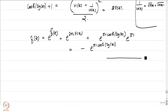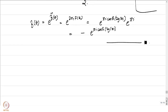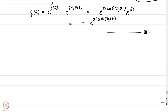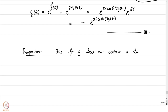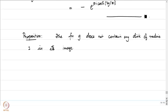Why did we deal with such a weird function g? The reason is that g is special. We will see in the next proposition that g is a function which does not contain any disk of radius 1 in its image. Let me write down the proposition: the function g does not contain any disk of radius 1 in its image. So if you have a disk D whose radius is greater than or equal to 1, then D cannot be contained in g(ω) — that is precisely what the proposition says.